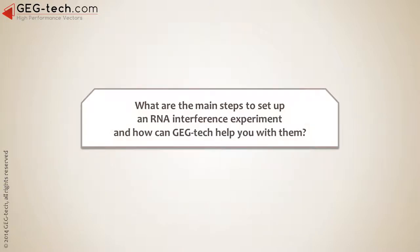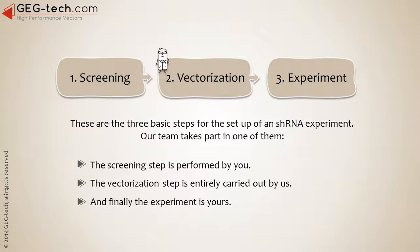Now, what are the main steps to set up an RNA interference experiment, and how can GEG Tech help you? There are three basic steps for the setup of an shRNA experiment, and our team plays a vital role in one of them. First, the screening step is performed by you. Second, the vectorization step is entirely carried out by us. And finally, the experiment is yours.